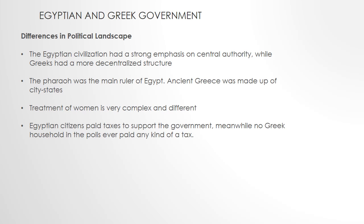Some of the differences in the political landscape: Egyptians had a strong emphasis on central authority while Greeks were more decentralized. Because of the separation of the land masses in Greece, it was very difficult for them to have a centralized government structure. It's believed that one of the reasons for Egypt's power structure was that the Egyptians always wanted to have large buildings, so they had to develop a class system to gather mass-numbered laborers to work for them. In Egypt, the main ruler was a pharaoh, whereas ancient Greece was made up of city-states — a major city and all its surrounding areas — that created their own rules and government.